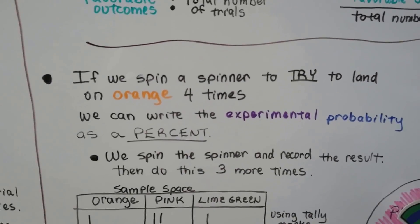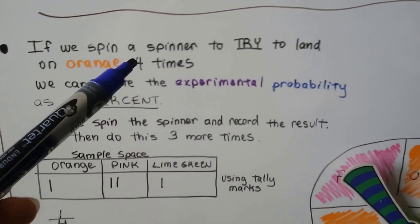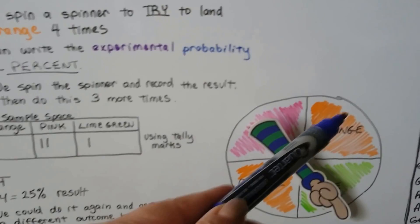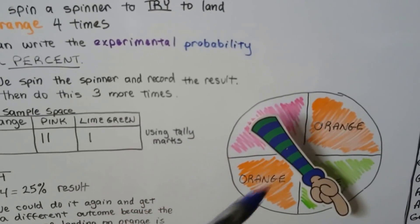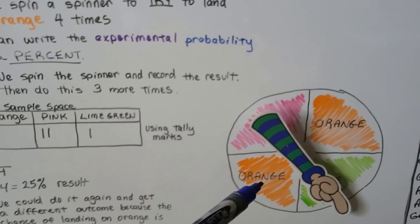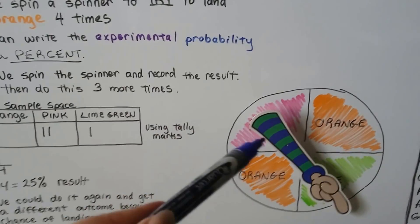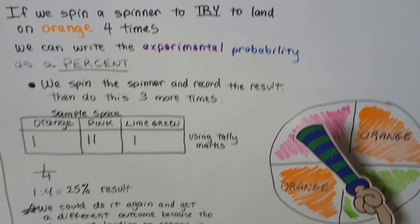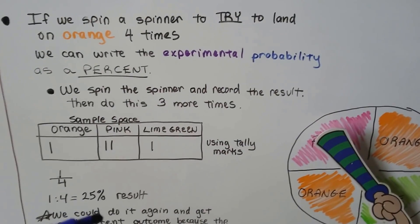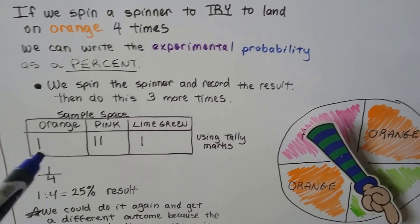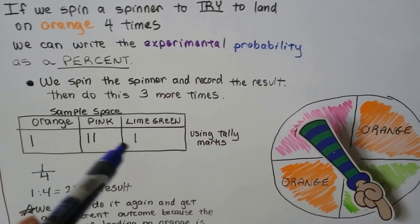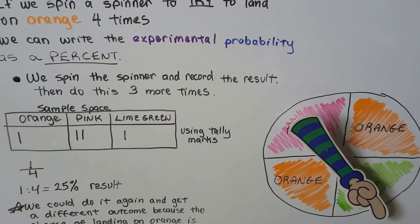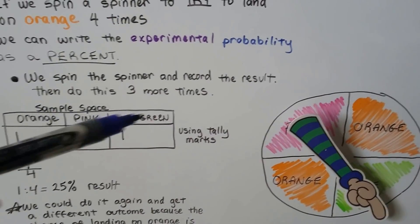If we spin a spinner to try to land on an orange, and we spin it four times, so I made this. And look, we can see that 50% of the time, we'd have a chance to get an orange one, because there's only four spaces, four sections, but two of them are orange. But, for experimental probability, if we spin it four times, and I actually did, I put a tally mark for each color that I got, I only got one orange. I landed on pink twice and lime green once. That's our sample space.